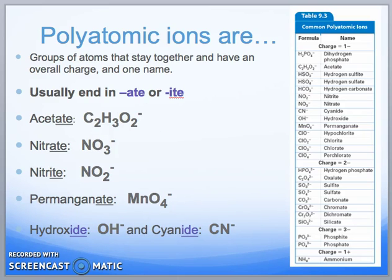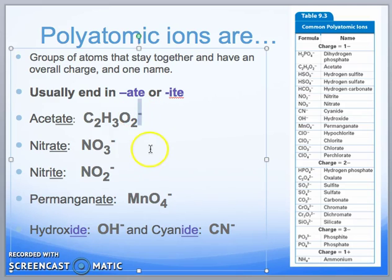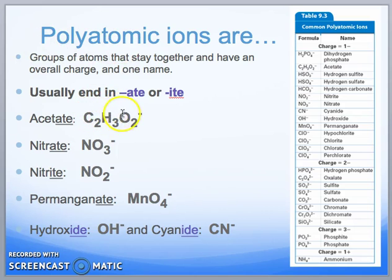Lastly are our polyatomic ions. Polyatomic means we have multiple atoms making up a compound already. These are groups of atoms that stay together and have an overall charge with one name. For example, C₂H₃O₂⁻ is an ion because we still have that charge at the end, and it's polyatomic because we have many different atoms. Table 9.3 also gives you a breakdown of our polyatomic ions.